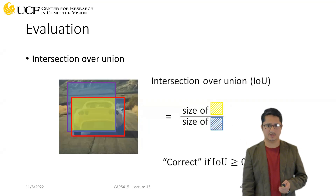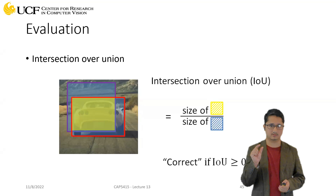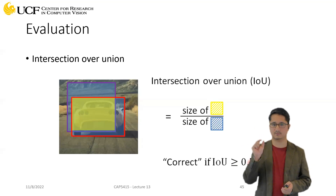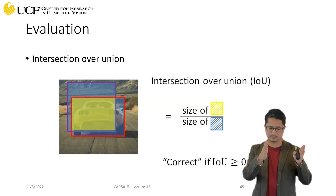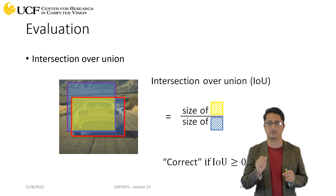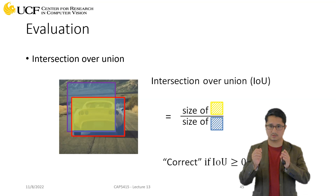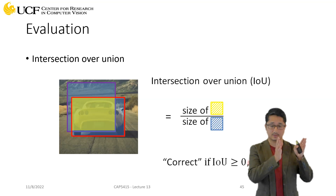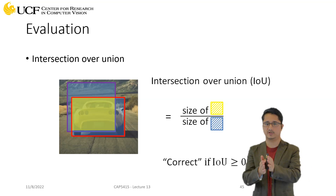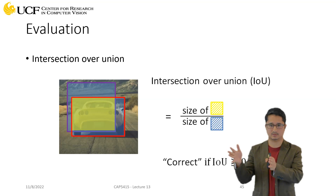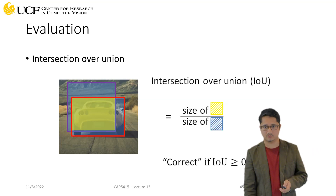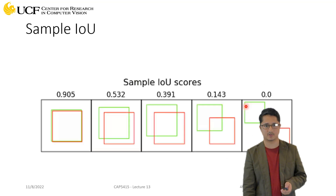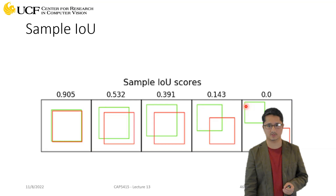Now, the threshold we talked about earlier — there's a distinction: that threshold was for the NMS algorithm, which is part of your algorithm, not part of your evaluation. Evaluation starts when you say: okay, this is the model, these are the predictions. NMS was part of the algorithm. That's a clear difference.